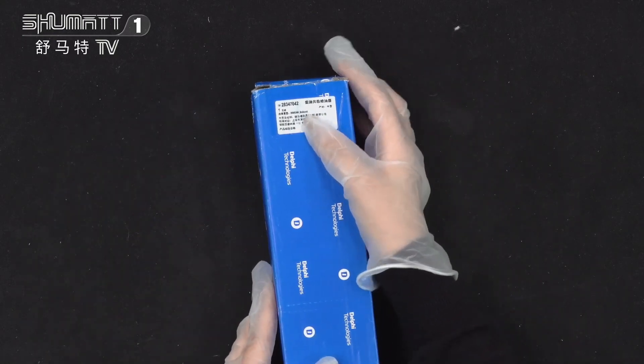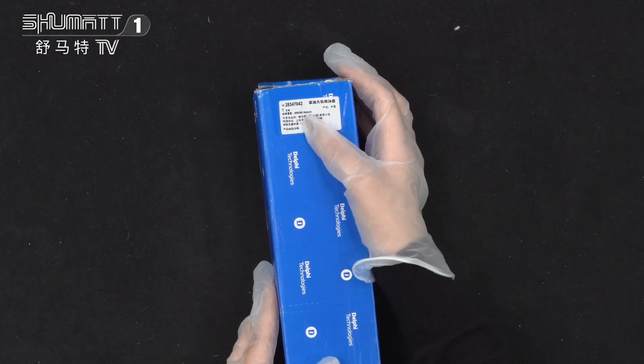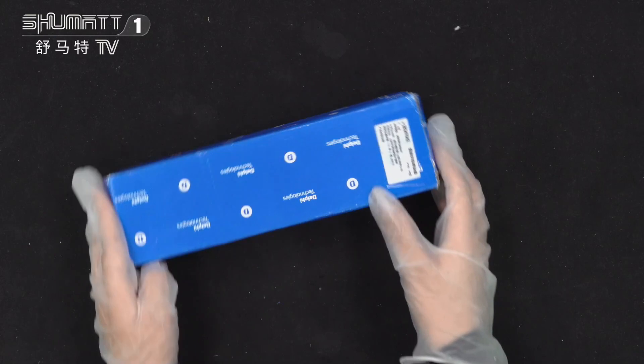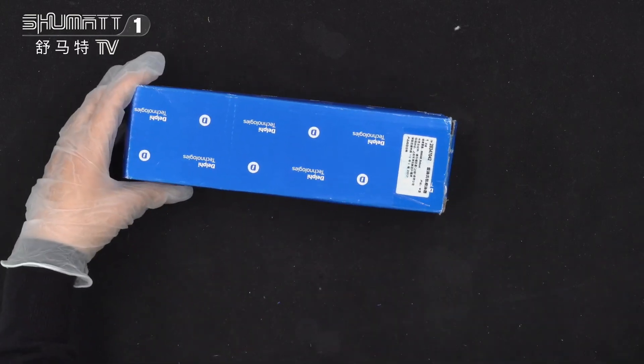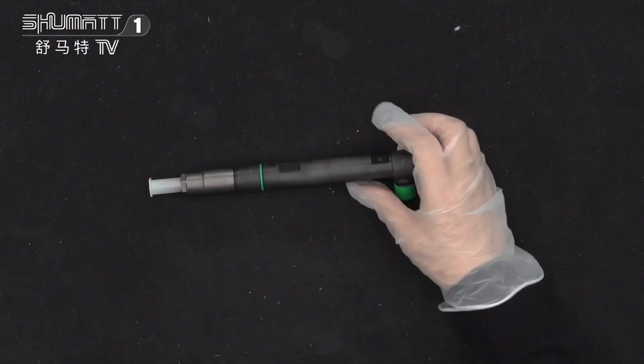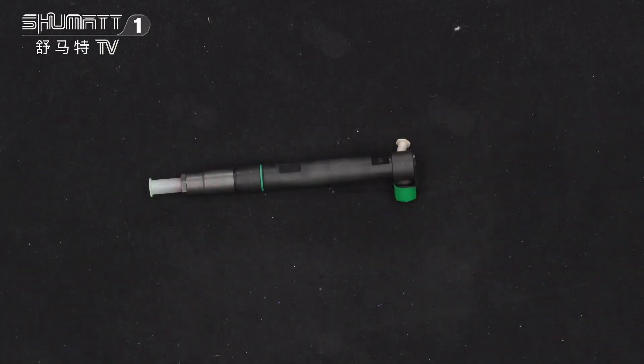Here with this part number and the product name. We can offer customized service. And inside the product, this part number... the part number of the fuel injector is 2834347042.